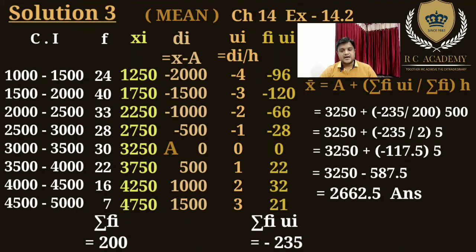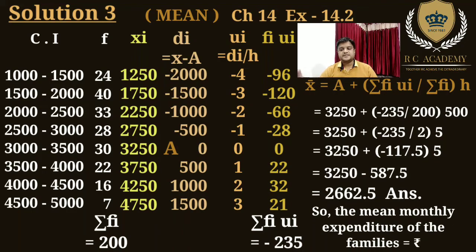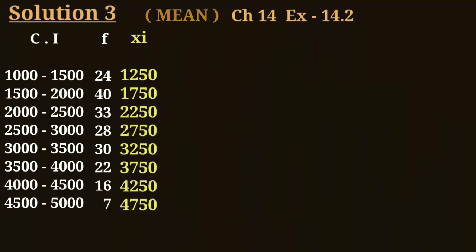This is the answer. So, the mean monthly expenditure of the families is rupees 2,662.50. Got it. Thank you.